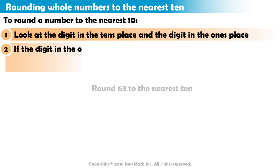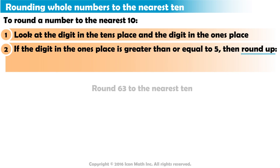If the digit in the ones place is greater than or equal to 5, we round up. That is, we add 1 to the digit in the tens place and change the digit in the ones place to 0.